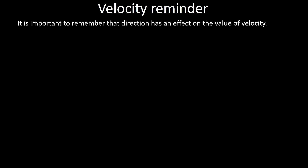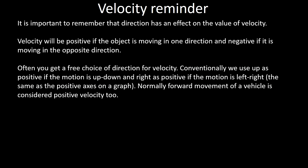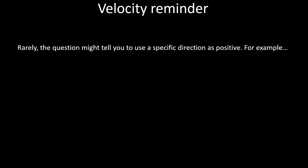A couple of reminders. Velocity is a quantity that has both size and direction. Velocity tells us how fast an object is moving, and it tends to be positive in one direction and negative in the opposite direction. The normal convention is: for up-down motion, up is positive; for left-right motion, right is positive; and for forward-backward motion, forward is positive. It doesn't have to be that way round, as long as you keep it consistent.